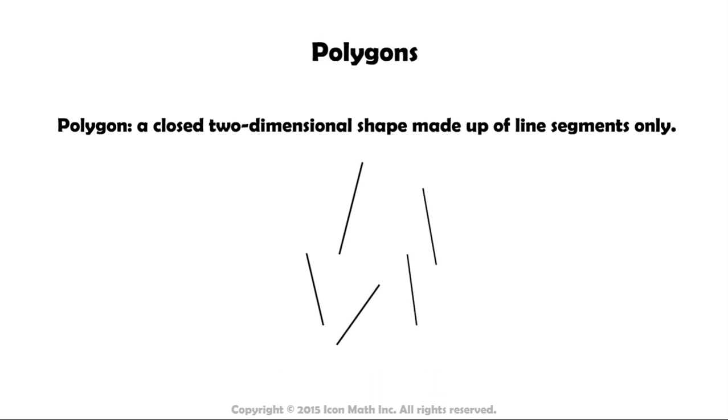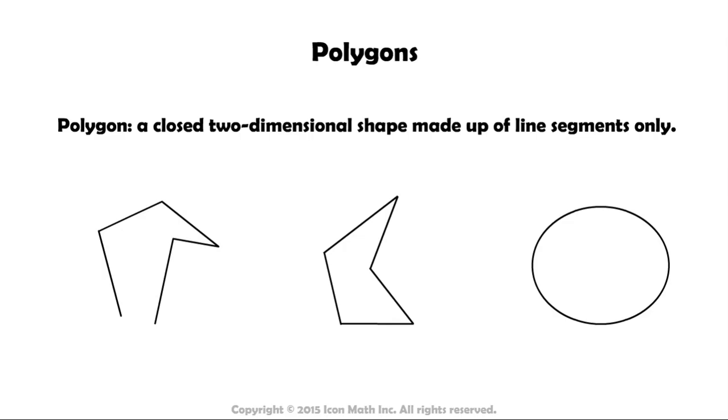So, there are two major characteristics that we can use to differentiate polygons from other two-dimensional figures. They are made up of line segments, and they are closed.